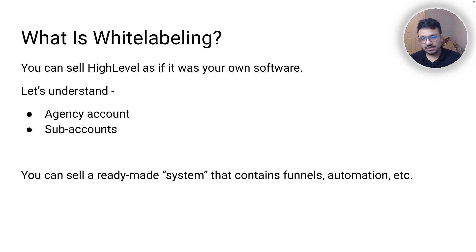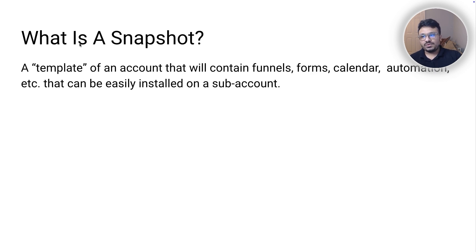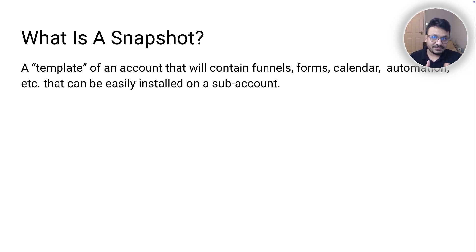You can sell sub-accounts to other businesses and charge them on a monthly basis. You can sell a ready-made system that contains funnels, automation, and all the sales and marketing features. To understand how, you need to know what a snapshot is. A snapshot is basically a template of an account containing all the sales and marketing features ready-made. You can create a sub-account, build an entire system, save it as a template, and then install that template on another account in minutes or seconds — making it very scalable to implement and sell ready-made systems.